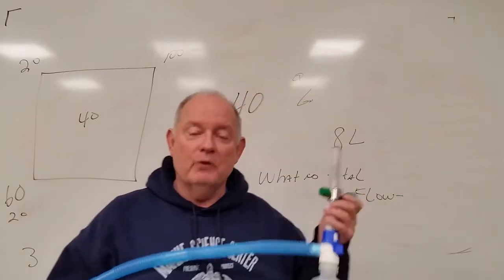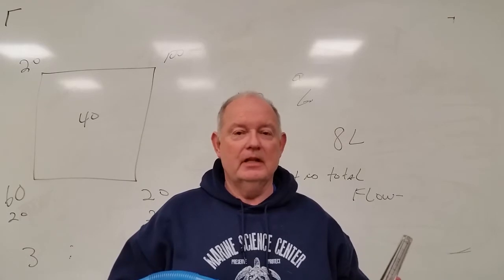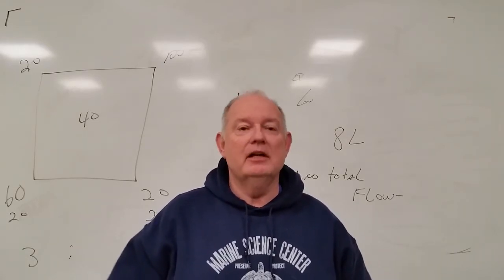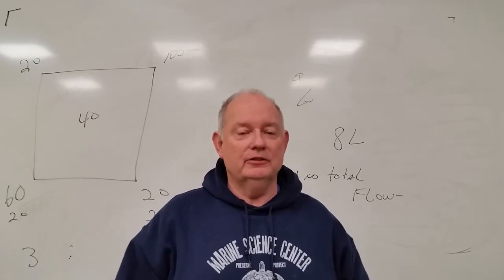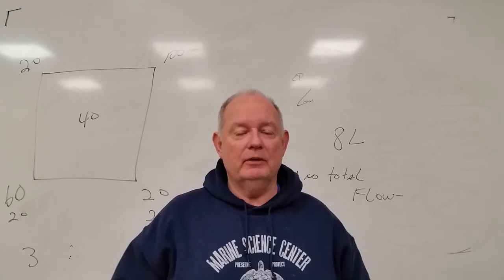Remember for a 40% the mixing ratios are 3 to 1. For a 60% the mixing ratio is 1 to 1. Those two FIO2's should be memorized. 60% is 1 to 1, 40% is 3 to 1.